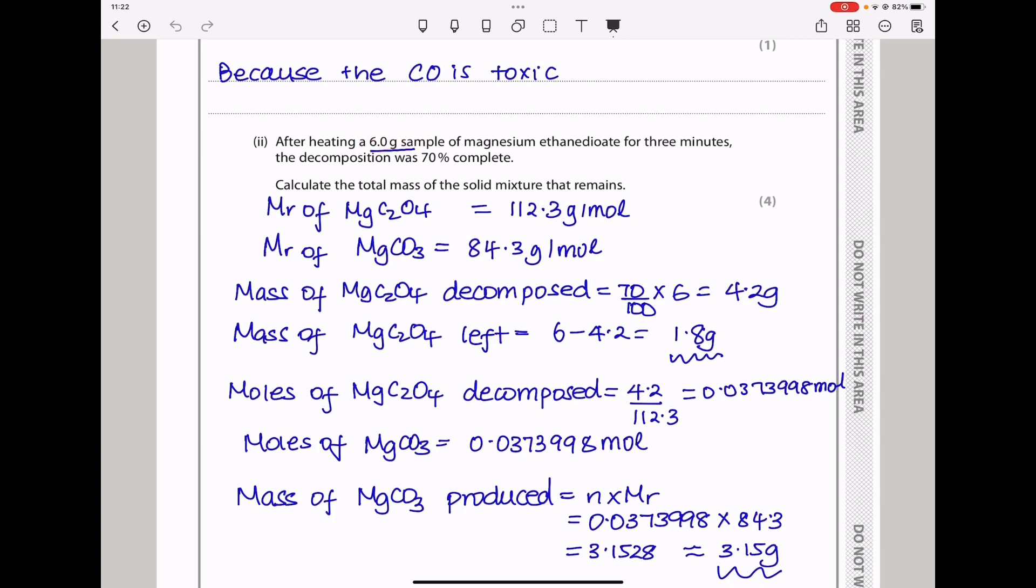Then next is to find the 70% decomposition. Remember, the original mass was 6, so 70% decomposition is 70 over 100 times 6, which is 4.2 grams. And the mass of magnesium ethane-di-oate left is going to be the original 6 minus how much has decomposed, and therefore this is 1.8 grams.